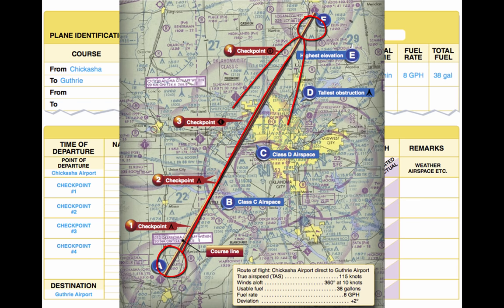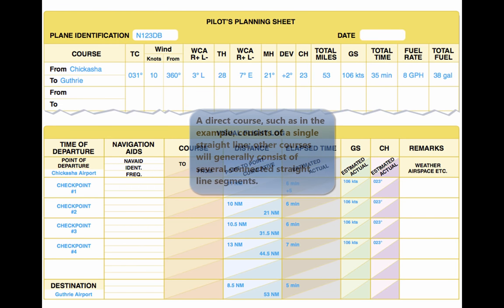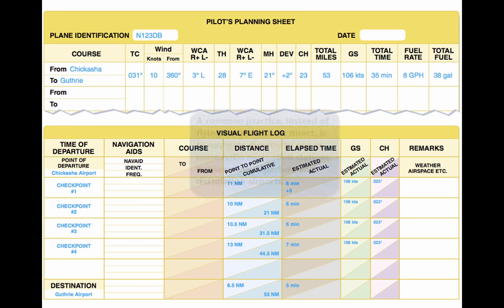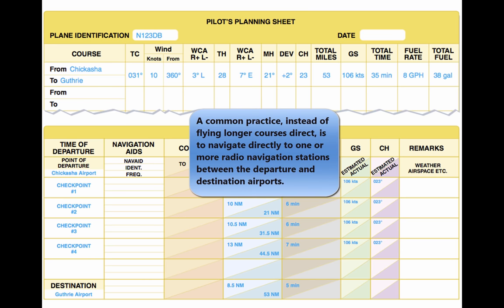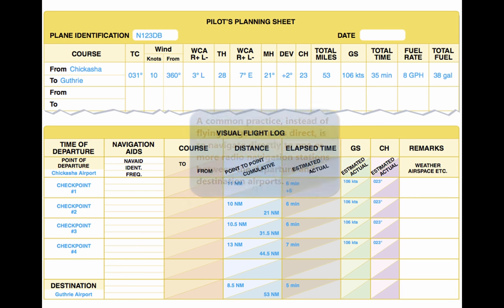If the route is direct, the course line consists of a straight, single line. If the route is not direct, it consists of two or more straight line segments. For example, a VOR station which is off the direct route but which makes navigating easier may be chosen. Radio navigation is discussed later in this chapter.